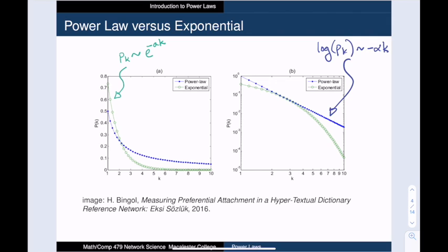In the log-log plot, the exponential decay leads to a nose dive in the green curve. This exponential decay prevents you from having ultra-high degree vertices.